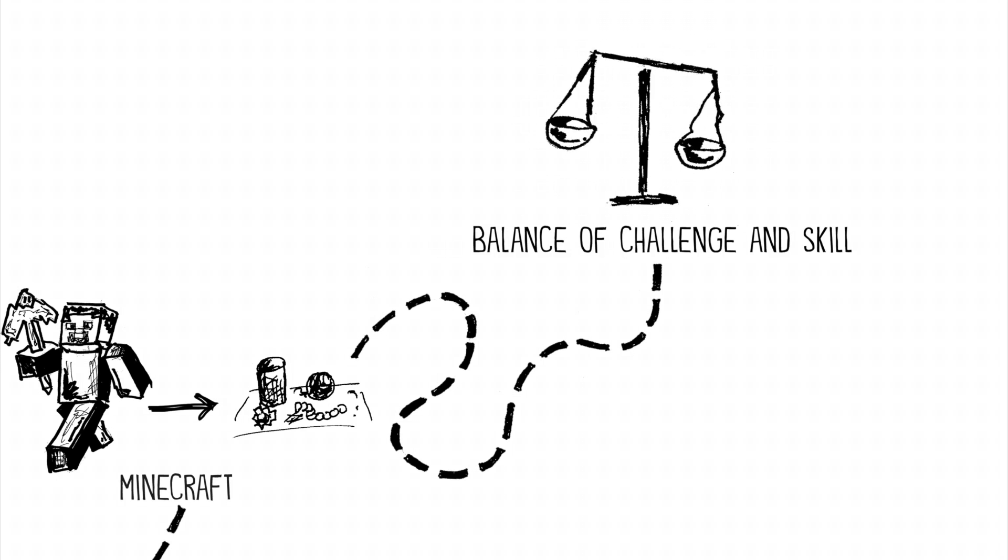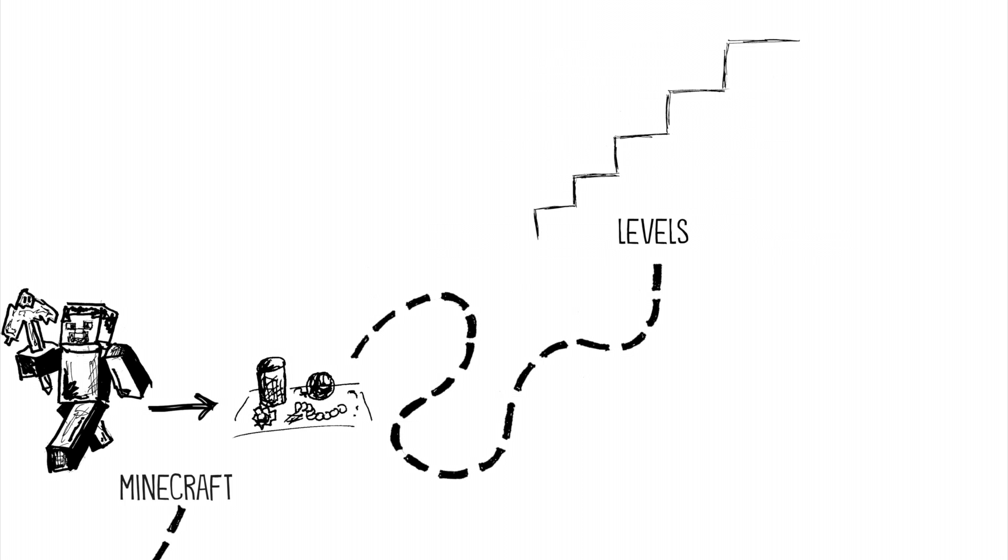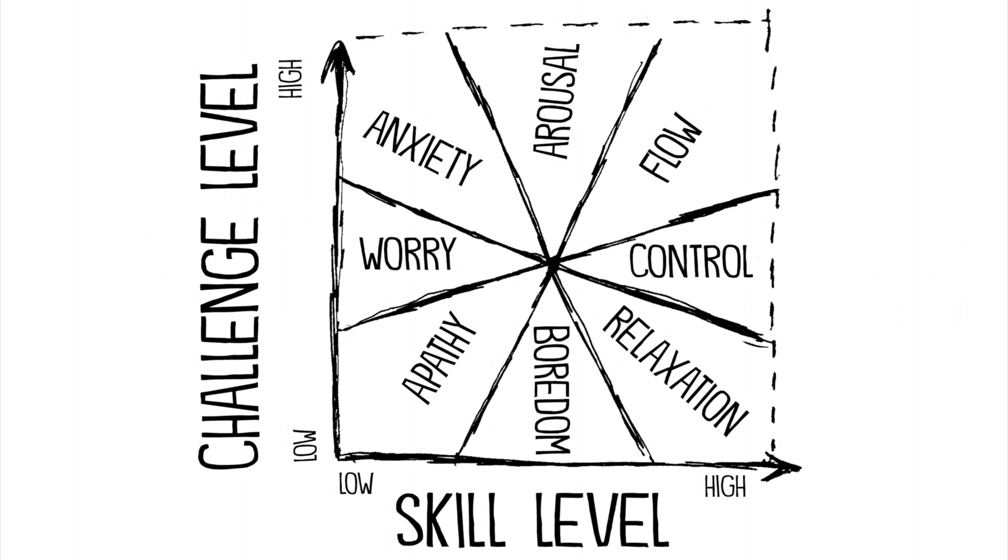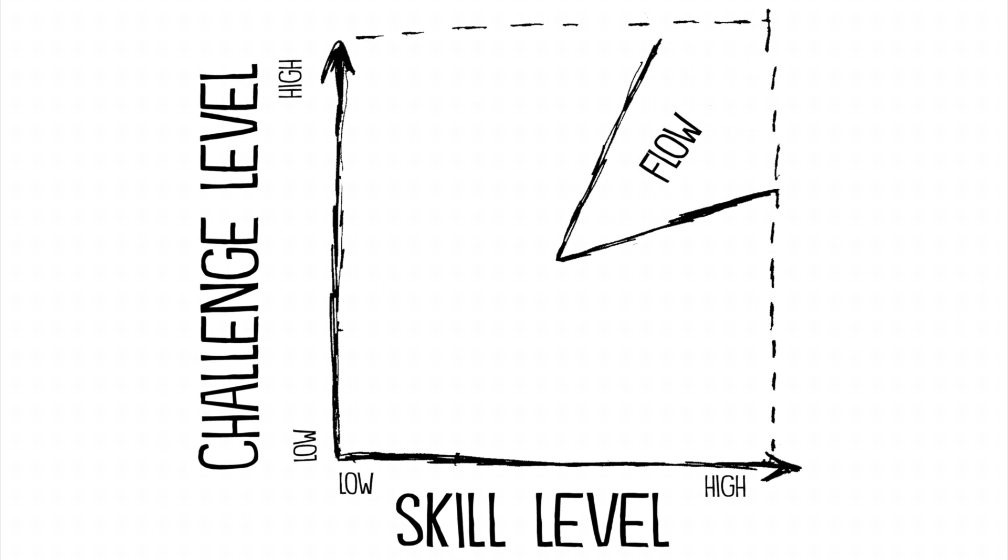Number three: finding the balance of challenge and skill. Video games have levels that are slightly harder than your skill level. One of the key ideas in flow theory is that people are more likely to hit this state of flow when there is a high challenge and a high perceived skill level.